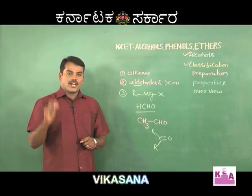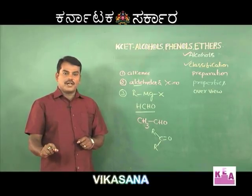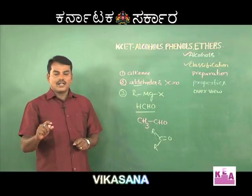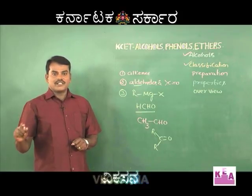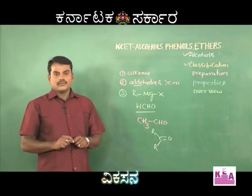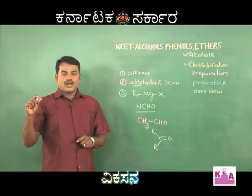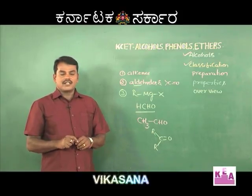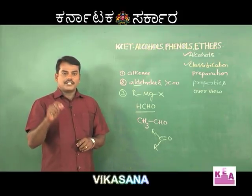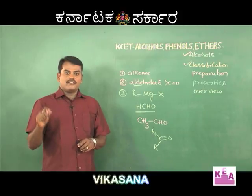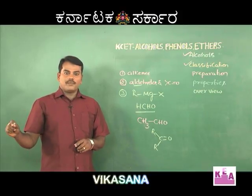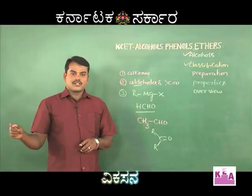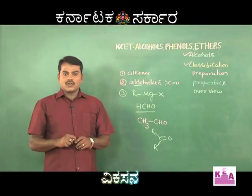In fractional distillation, rectified spirit is obtained, but you cannot obtain 100% alcohol unless you mix with benzene. Alcohol has different varieties: 95.5% alcohol plus 4.5% water is called rectified spirit, and 100% alcohol is called absolute alcohol.